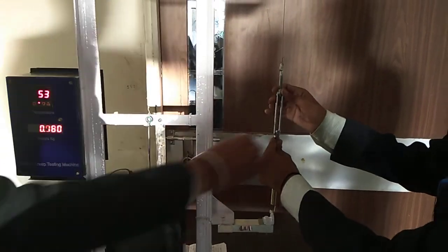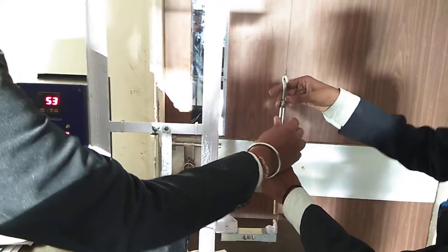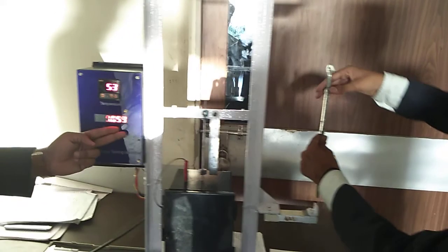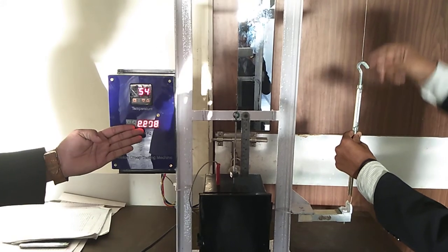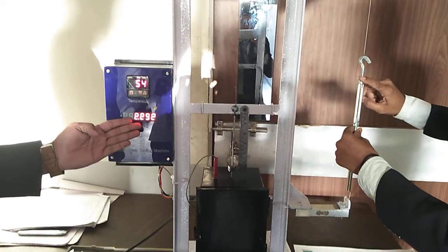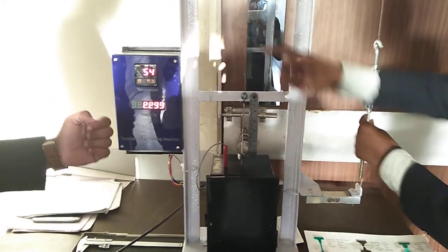Rishabh, please. You can see here the readings increasing in the digital indicator. This is because of the tension created by the turnbuckle and the wire rope on the specimen.